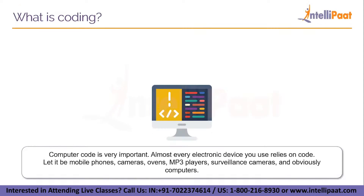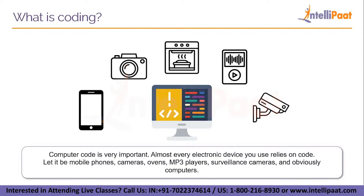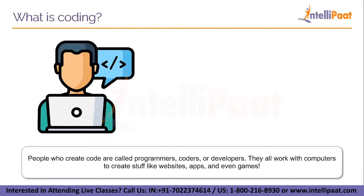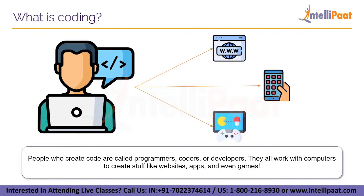Let's go on to what is coding. Computer code is very important. Almost every electronic device you use relies on code — let it be mobile phones, cameras, ovens, MP3 players, surveillance cameras and obviously computers. At first, the way things work can seem quite confusing, but when you break it down, it's actually simple. People who create code are called programmers, coders or developers. They all work with computers to create stuff like websites, apps and even games.